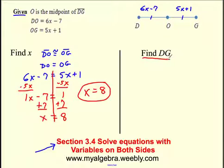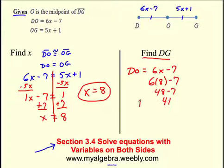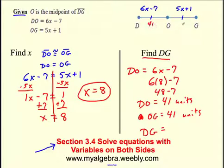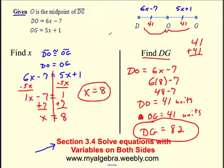X can be positive, negative, it doesn't matter. It's just part of the equation here. Now when I find a distance, this better be a nice positive number for me. So what is D to G? I know from D to O is 6X minus 7. And now I know X is 8. So I'm really saying 6 times 8 minus 7. So 6 times 8 is 48 minus that 7 gives me 41. So I know from D to O is 41 units. And if DO is 41, what do you think OG is? If it's the midpoint, it also is 41 units. But that's not the question. The question is what is from D to G? If this is 41 and this is 41, add them together. So D to G is 82 units long.